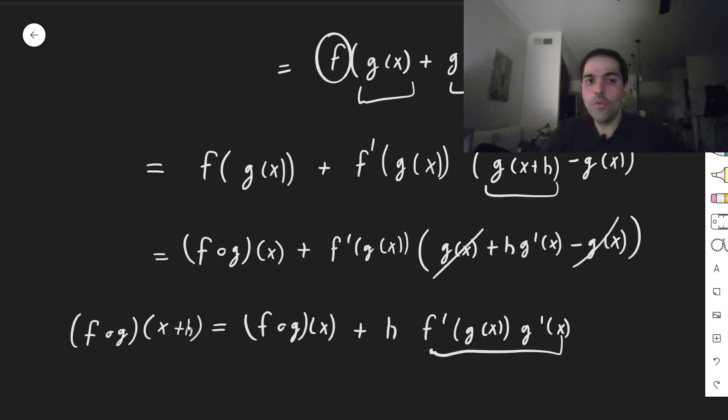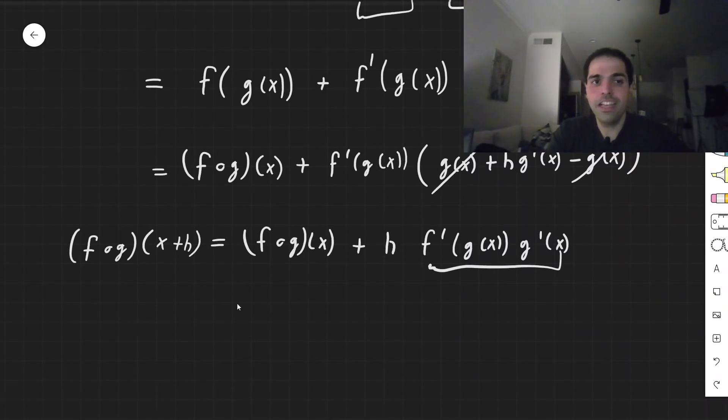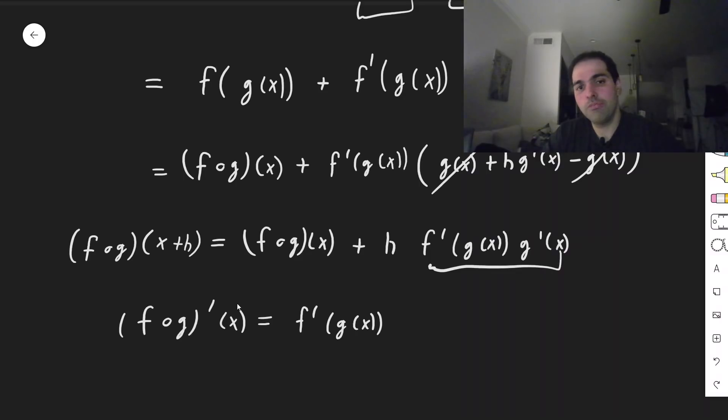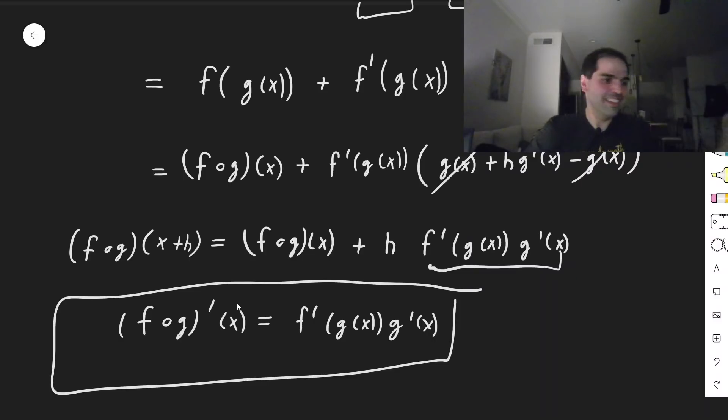So indeed, we have rigorously shown that the derivative of f composed with g is f prime of g times g prime. I mean, how nice is that? Math can be pretty sometimes.